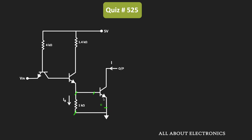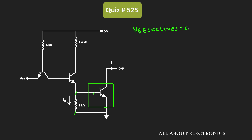And for that, we should know whether this transistor is operating in the active region or in saturation. We have been given that VBE in the active region is equal to 0.7V, while whenever the transistor is operating in saturation, then VBE saturation is equal to 0.75V. So basically, here we need to find whether this transistor is operating in the active region or in saturation.